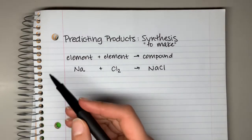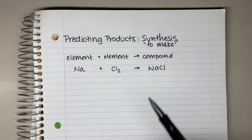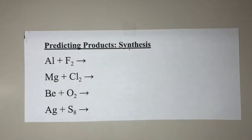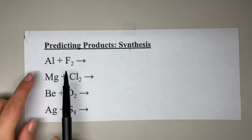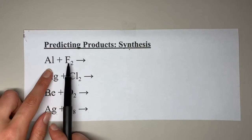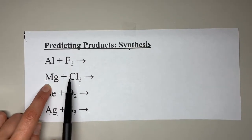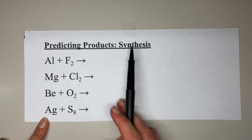The trick is: whenever you see two elements as reactants, that's a synthesis reaction. Notice that each of these four example reactions has two elements reacting together — element plus element, element plus element — that is how you know it's a synthesis reaction.